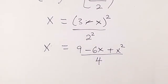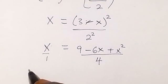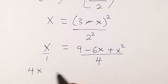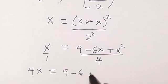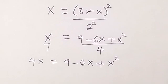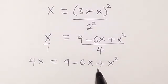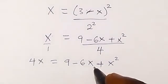Now we can use this to form an equation. Let's cross multiply, which gives us 4x equals to 9 minus 6x plus x squared. From here we can form a quadratic equation by bringing everything to one side, rearranging so we maintain one side.